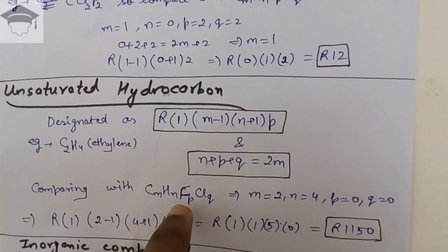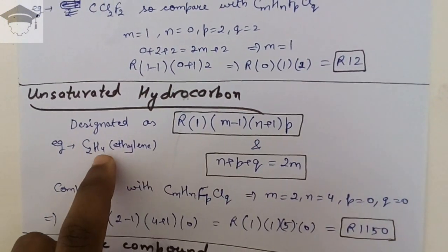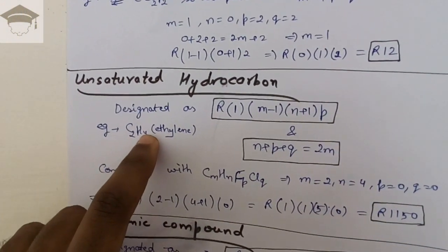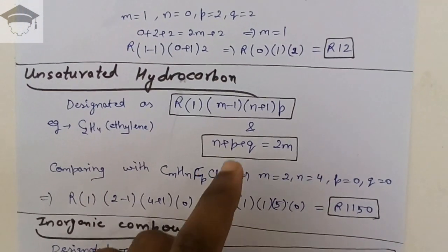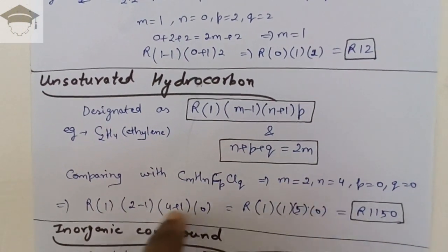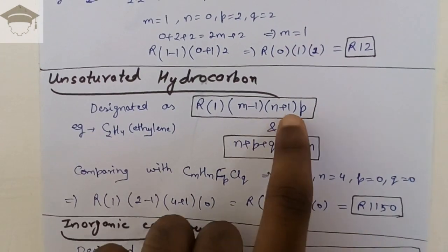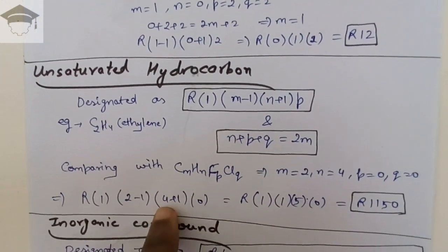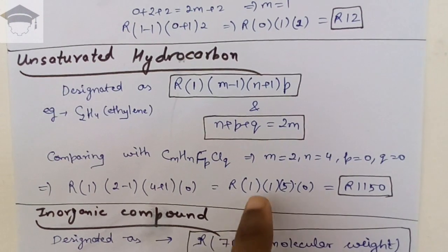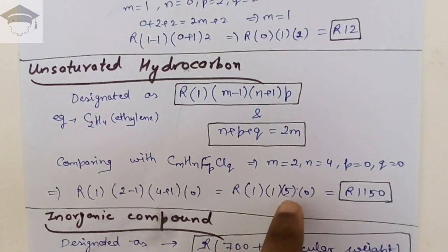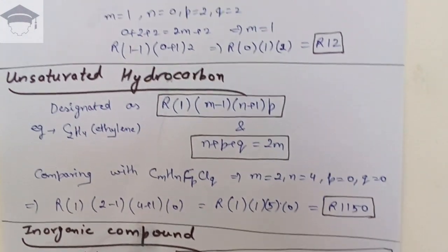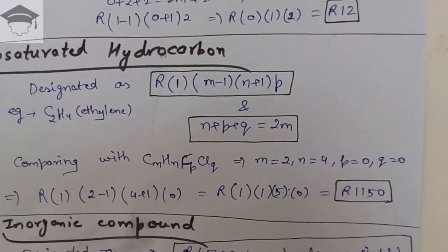Comparing C2H4 with CmHnFpClq: m = 2 (subscript of carbon is 2), n = 4 (subscript of hydrogen is 4), and p = q = 0 (no fluorine or chlorine). So we write R1(m−1)(n+1)(p) = R1(2−1)(4+1)(0) = R1(1)(5)(0) = R1150. Therefore C2H4 is denoted by R1150.